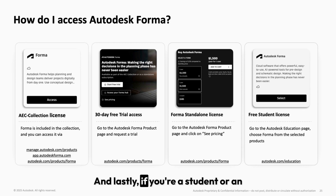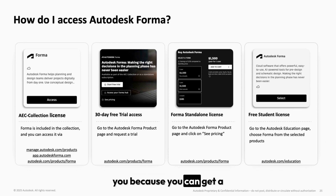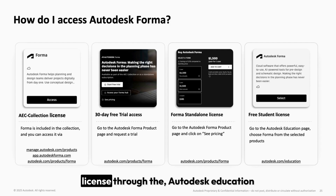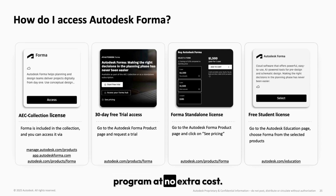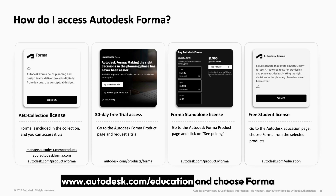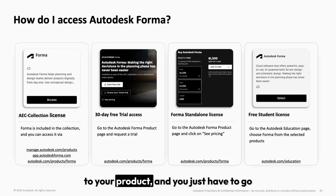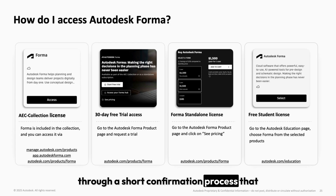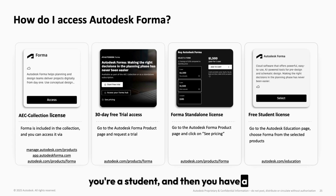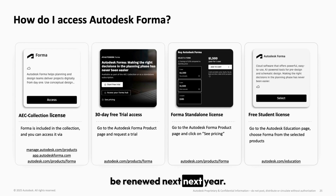And lastly, if you're a student or an educator, it's a great opportunity because you can get a license through the Autodesk Education Program at no extra cost. Just head over to autodesk.com/education and choose Forma as your product. You'll go through a short confirmation process to verify you're a student, and then you'll have a yearly license that can easily be renewed next year.